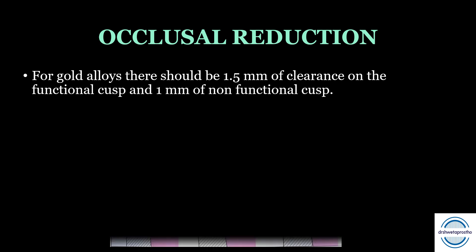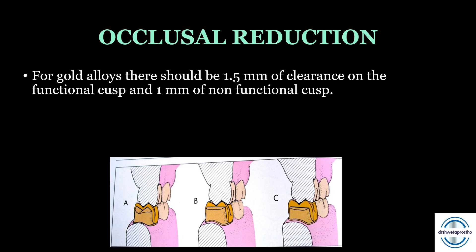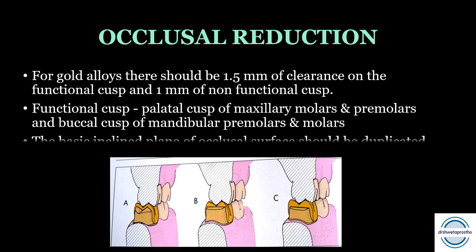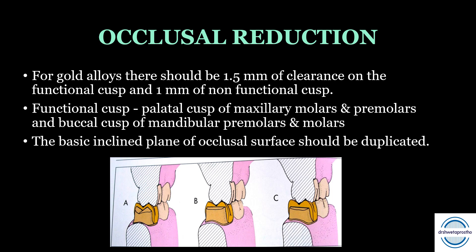For occlusal reduction with gold alloys, there should be 1.5 mm of clearance on the functional cusp and 1 mm of clearance on the non-functional cusp. The functional cusps are the palatal cusps of the maxillary molars and premolars, and the buccal cusps of the mandibular premolars and molars. The basic inclined planes of the occlusal surface should be duplicated so that adequate clearance is present. If the occlusal surface is flattened, reduction may be insufficient — violating mechanical principles — or it may lead to over-shortening of the preparation, violating the biological principles.